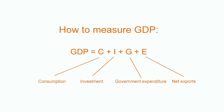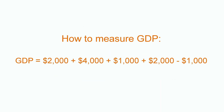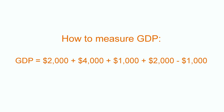Remember the formula for GDP. Savings are not taken into account — or rather, they are considered inside the investments. In this case, the answer is $8,000.